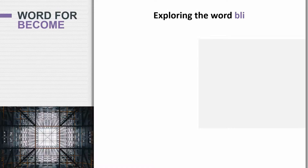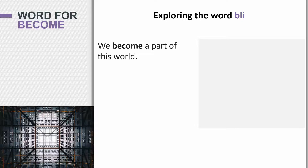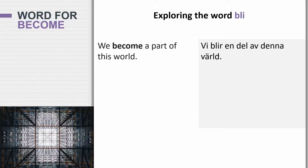Now let's look at the word 'to become' — att bli. This is an extremely useful word in Swedish because it allows you to say a lot of different things. The present form of bli — if you were to guess, what do you think it is? Blir. You add on an R. So 'we become a part of this world' — Vi blir en del av denna värld.